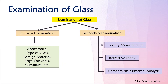Examination of glass is done in two ways: primary examination and secondary examination. In primary examination we look at appearance, type of glass, foreign material, edge thickness, curvature, and more. In secondary examination we check density measurement, refractive index, and elemental and instrumental analysis. In this video we will discuss density measurement; the remaining two will be covered in the next video.